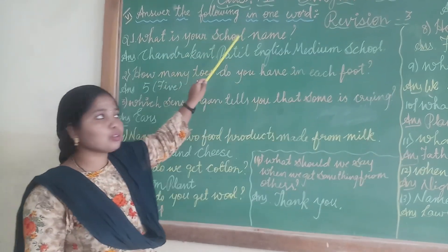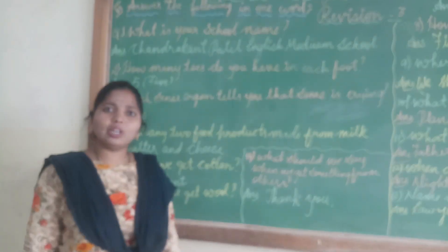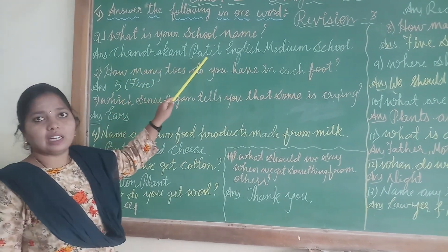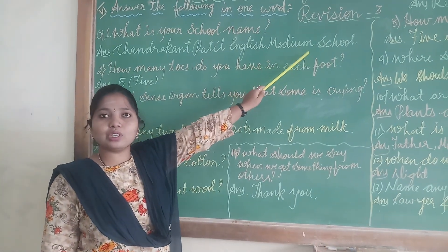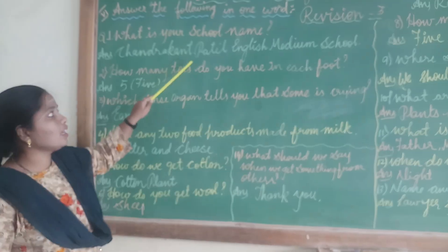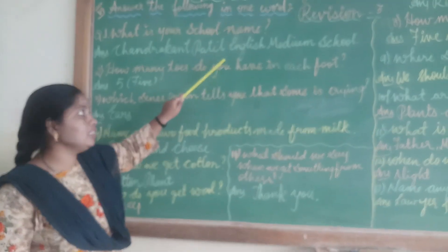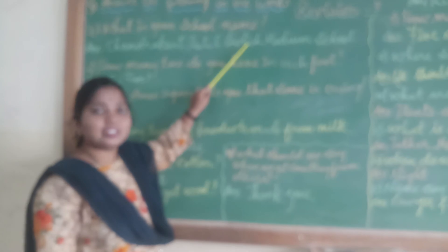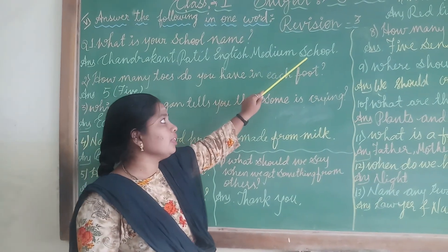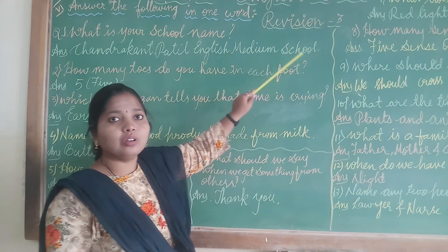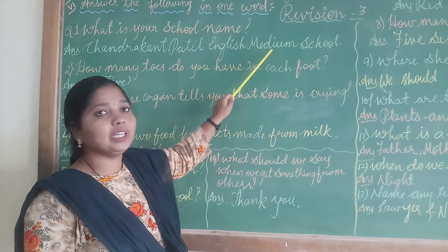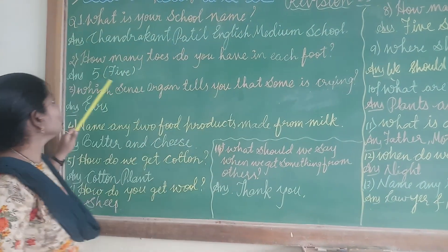First question: What is your school name? Your school name is Chandrakhan Patil English Medium School. C-H-A-N-D-R-A-K-A-N-D, Chandrakhan. P-A-T-I-L, Patil. E-N-G-L-I-S-H, English. M-E-D-I-U-M, Medium. S-C-H-O-O-L, School. The school name is Chandrakhan Patil English Medium School.